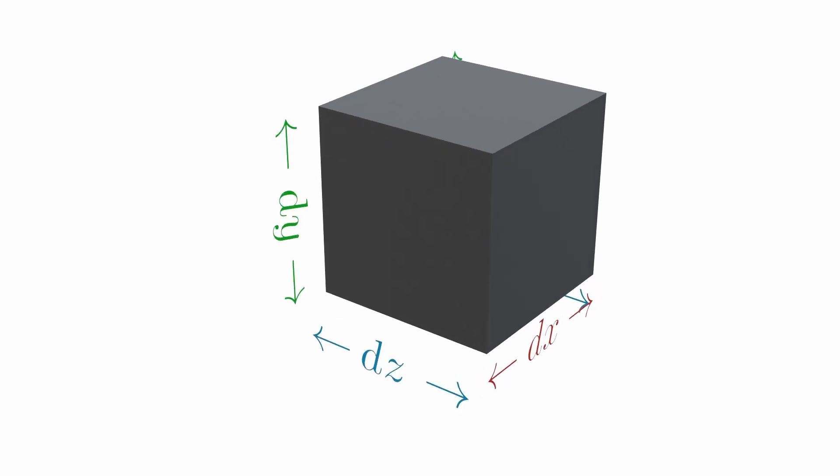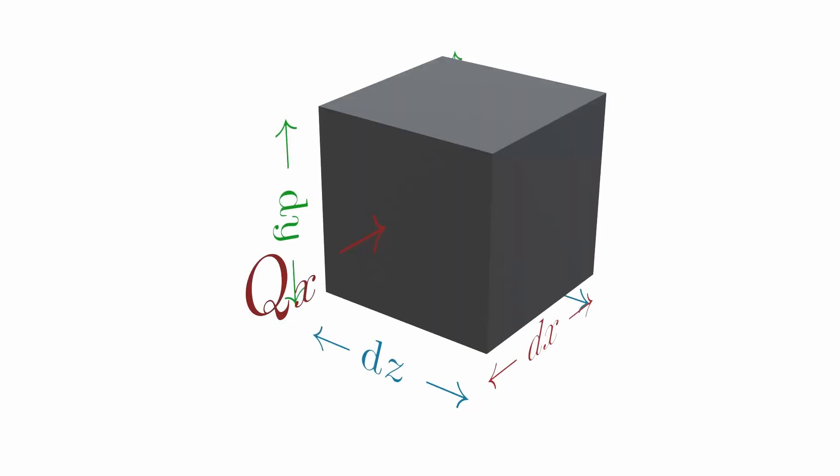Let's say heat influx qx along the x direction in the time interval dτ is -kx times area (dy dz) times ∂T/∂x times dτ. Here kx is the thermal conductivity along the x axis and dy dz is the area.